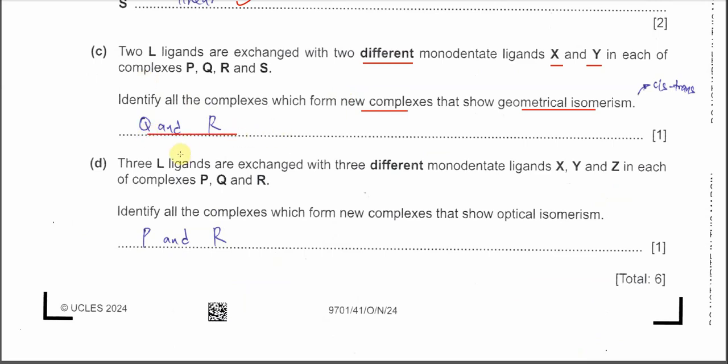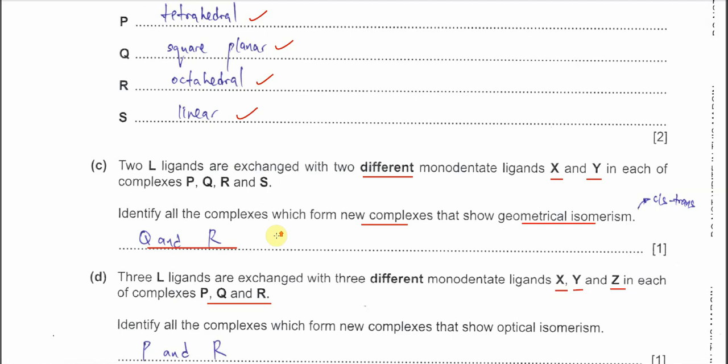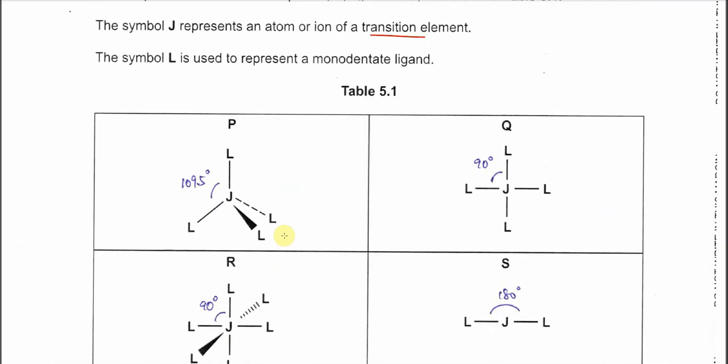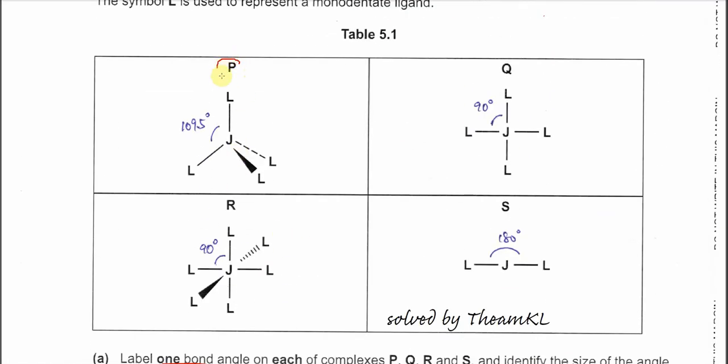For part D, three ligands are exchanged with three different monodentate ligands X, Y, Z. So now there are three different ligands X, Y, Z, and these ligands will exchange the ligands in complexes P, Q, R. The answer is P and R. Of course the square planar cannot be.